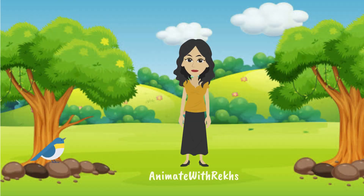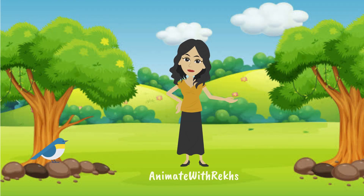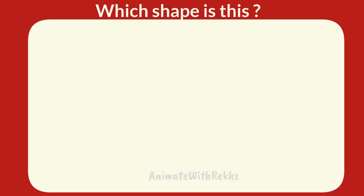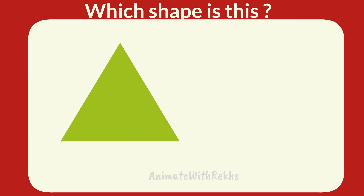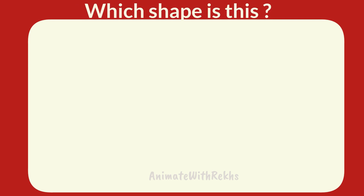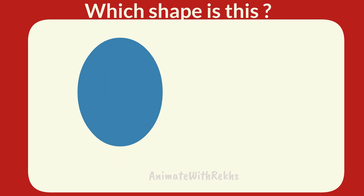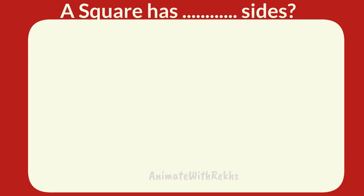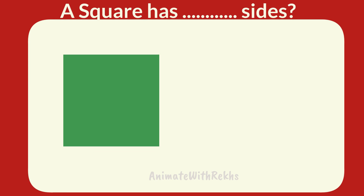Today we discuss some questions related to shapes. Which shape is this? Answer: Triangle. Which shape is this? Answer: Oval. A square has how many sides? Four sides.